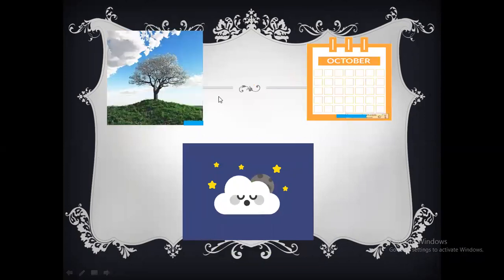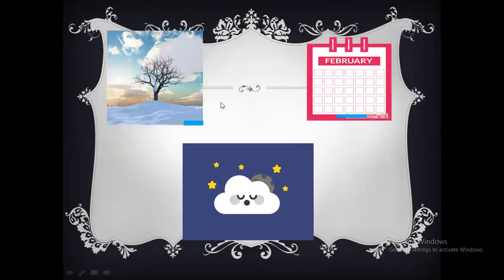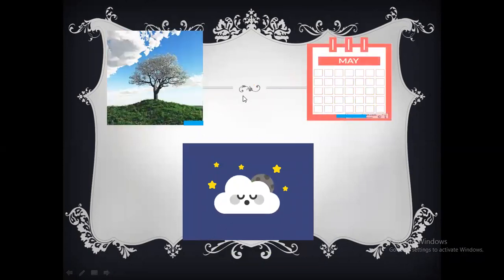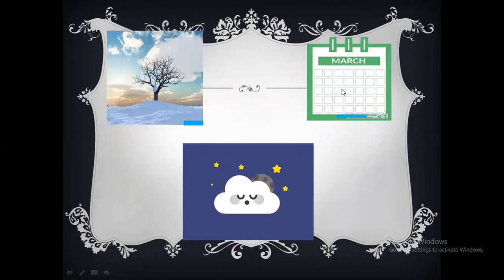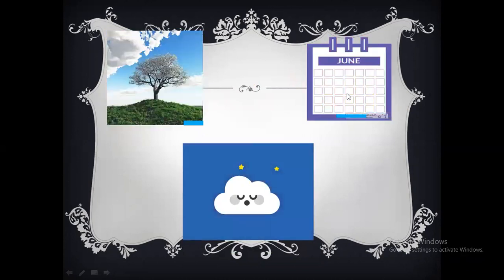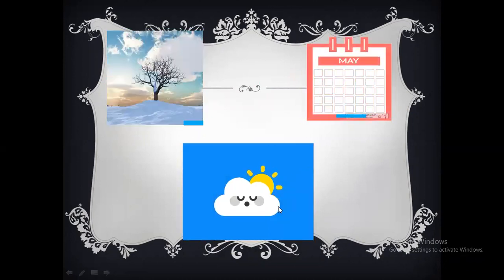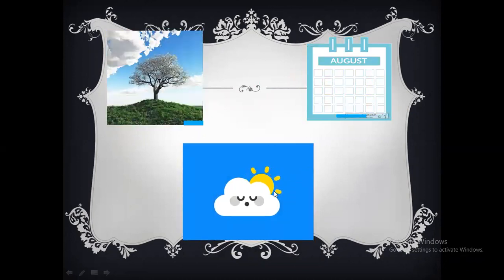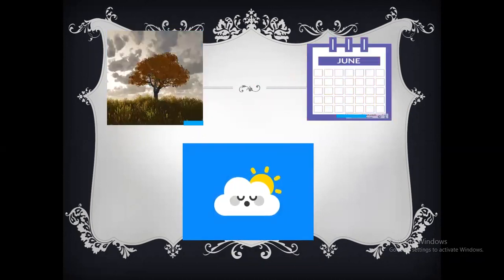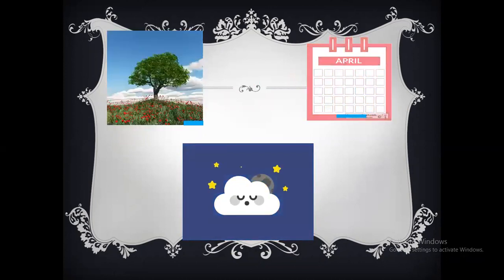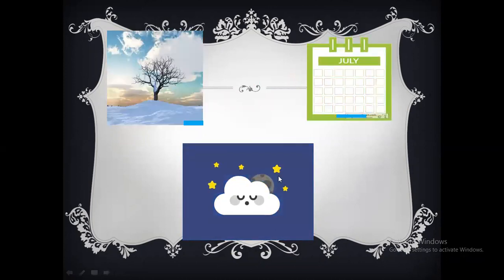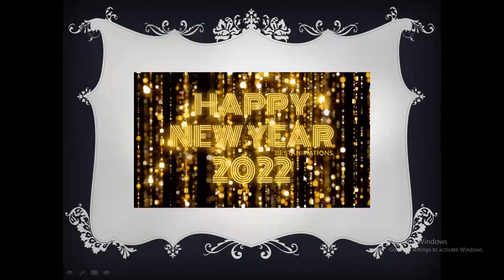As you know, we can represent time in different forms. Seasons represent time. Days, weeks, months, and years also represent time. Day and night also represent time. So there are different forms of time, or time can be represented in different forms.